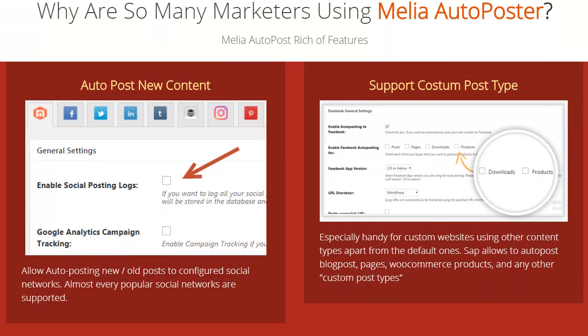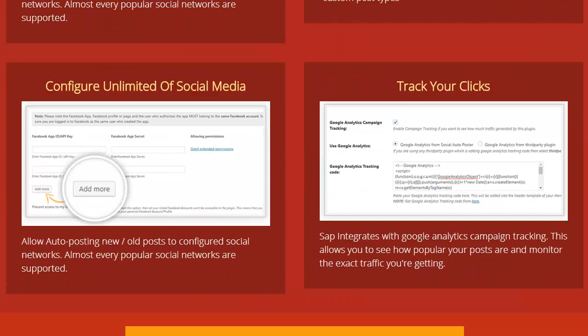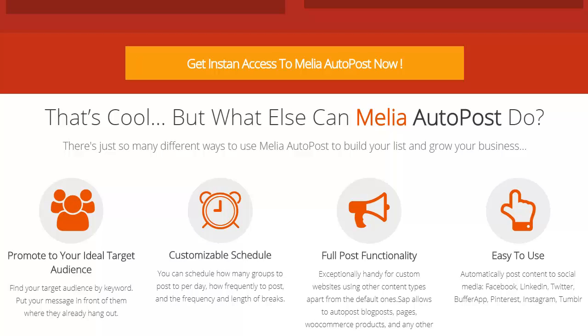Why are so many marketers using Melia Auto Poster? It's completely customizable — pick and choose what you want to post. It's great for custom websites using other content types apart from the default ones, so it allows you to auto post blog posts, pages, WooCommerce products, and any other custom post types. You can configure an unlimited amount of social media accounts and allow auto posting of new and old posts. Almost every popular social network is supported, and it integrates with Google Analytics campaign tracking so you can see how popular your posts are and monitor the exact traffic you're getting.